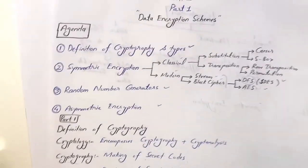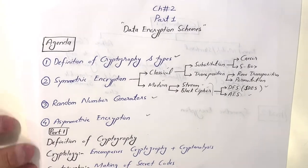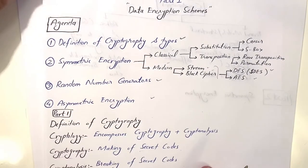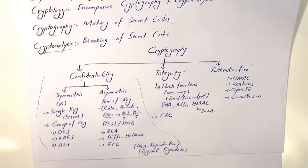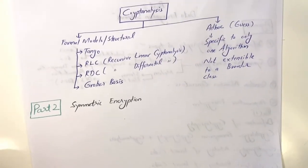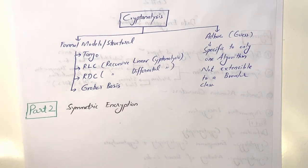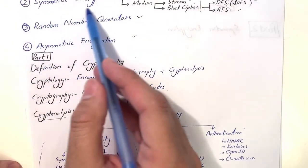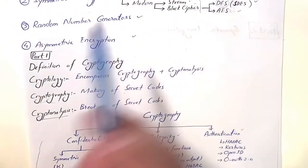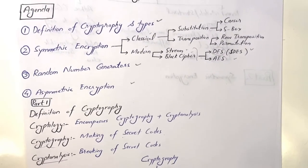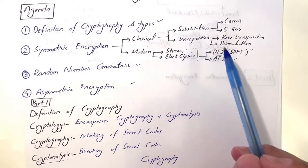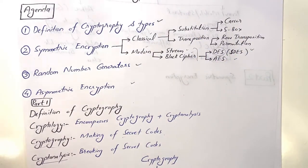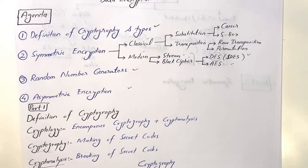That concludes the first agenda item: definition of cryptography, its functions, different algorithms, and cryptanalysis methods. Now let's move to the second agenda item: symmetric encryption. We will discuss step by step the classical and modern methods, starting with the classical techniques and their methods with examples.